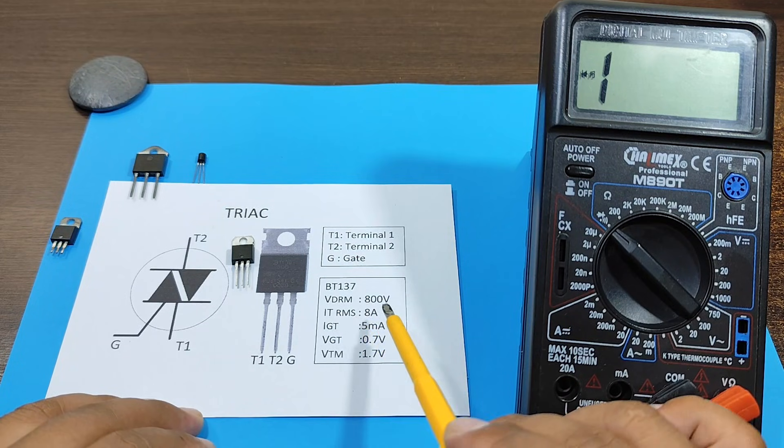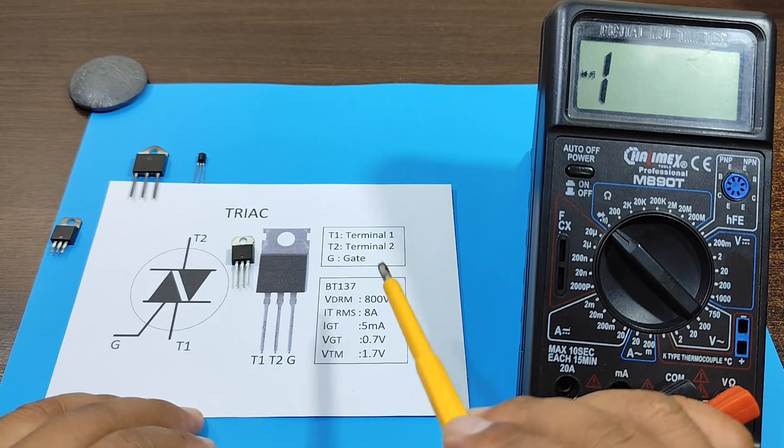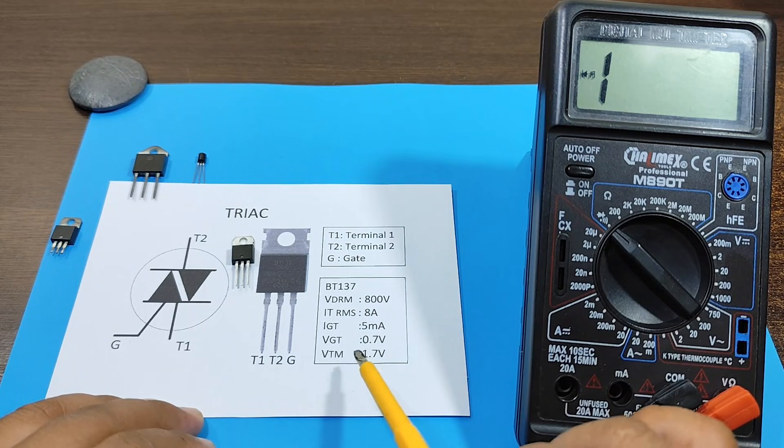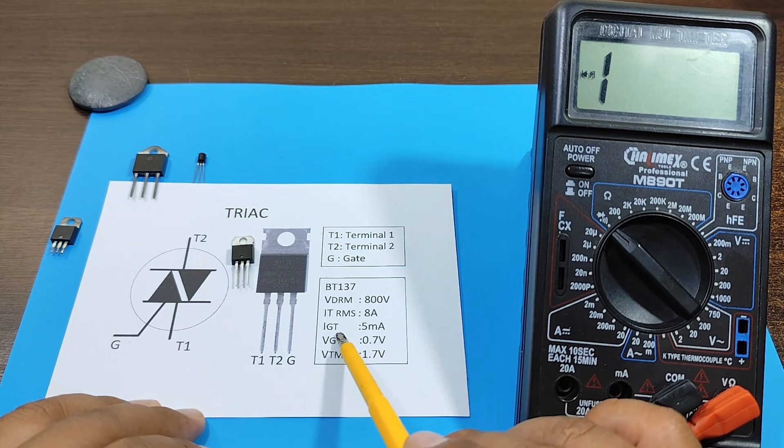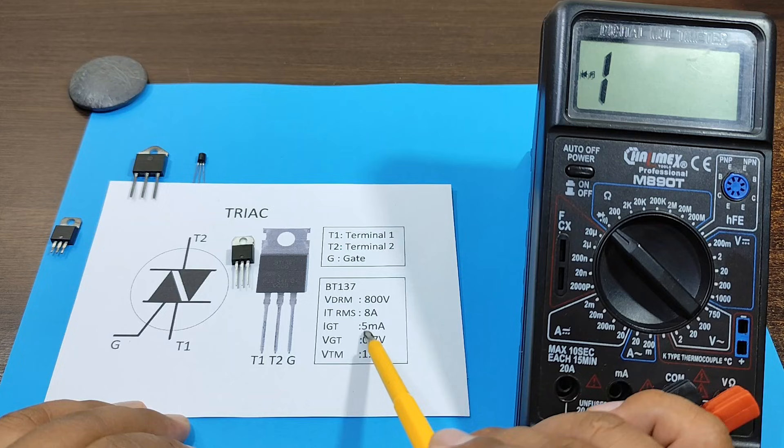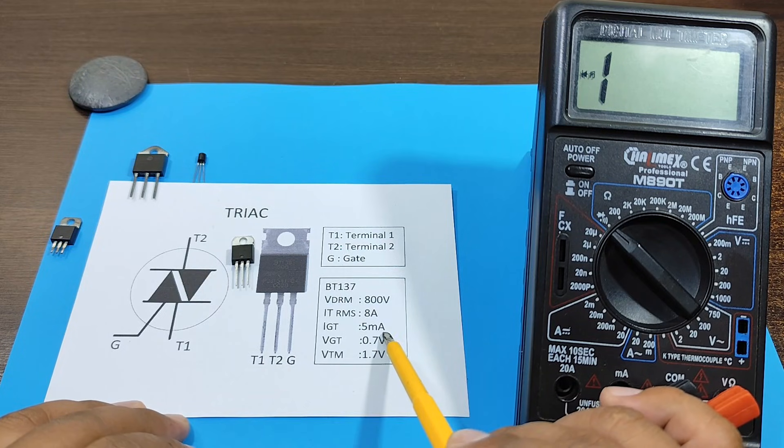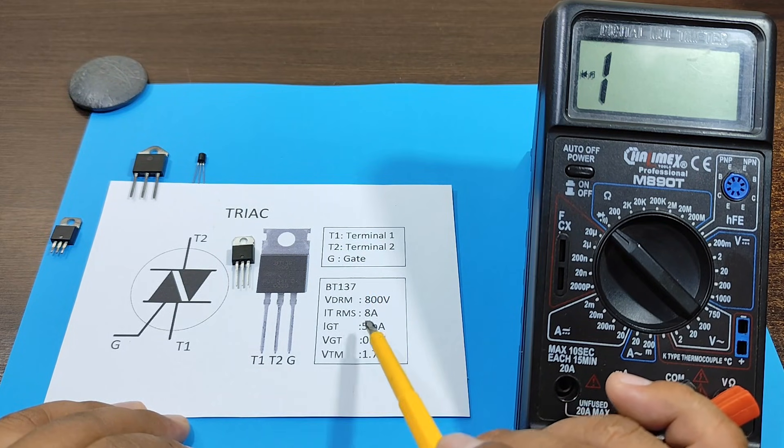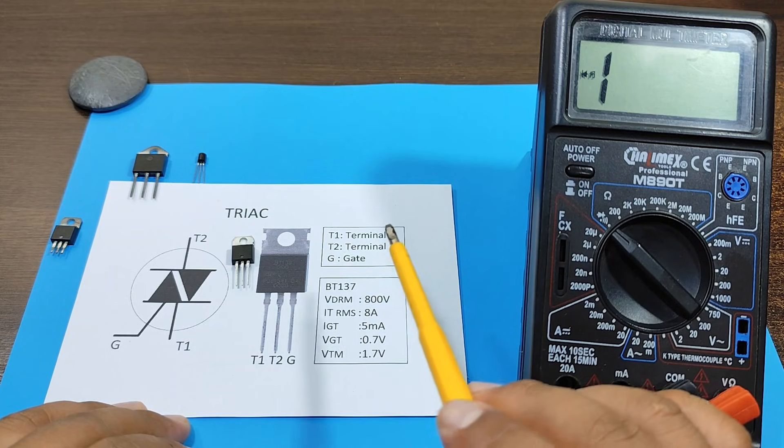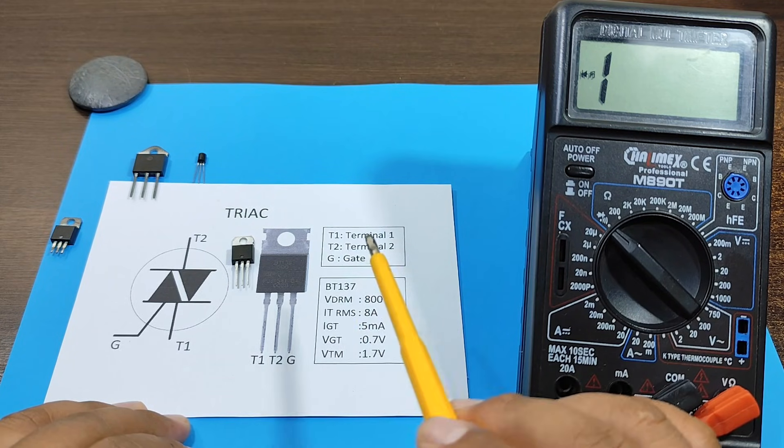There are triacs of 4, 16, 24, or even 40 amps. Then there's the trigger current. This is a characteristic to consider, since there are triacs that require a lot of current, and there are others that require very little current to activate the triac.